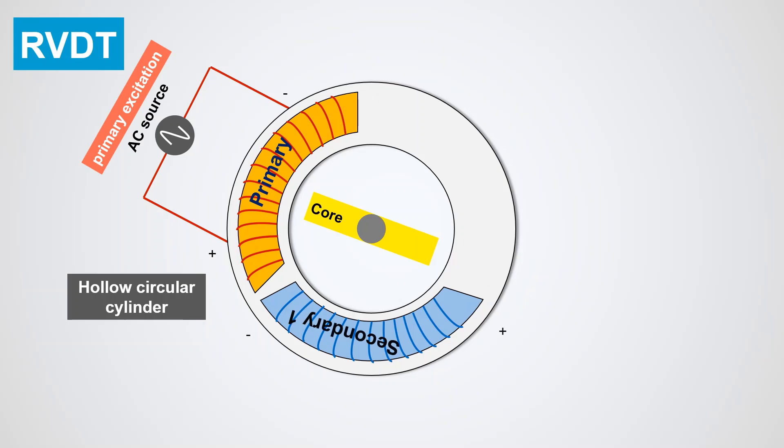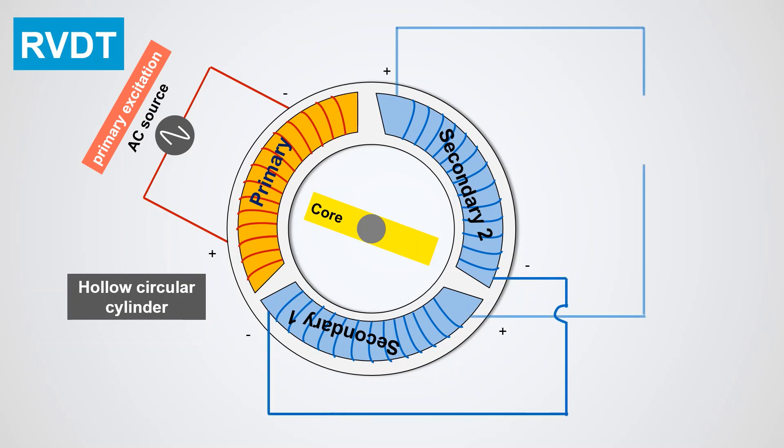Two secondary coils having an equal number of turns are wrapped on either side of the primary coil at equal distances from the primary coil. The two secondary coils are connected in series generating AC output voltage.